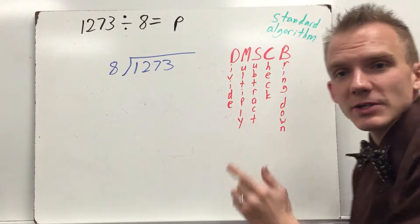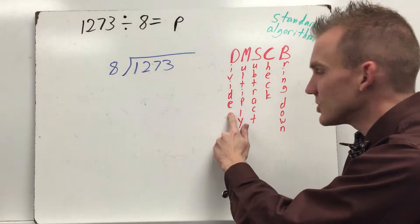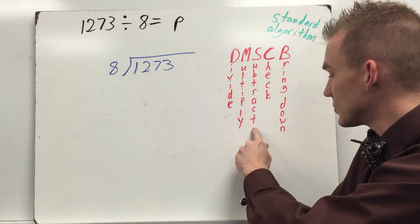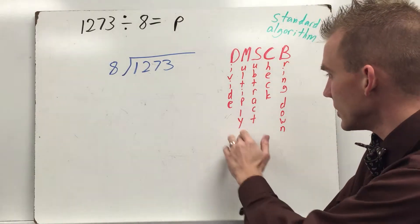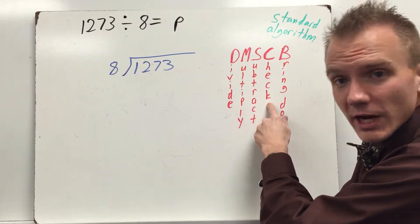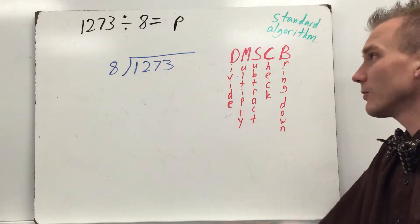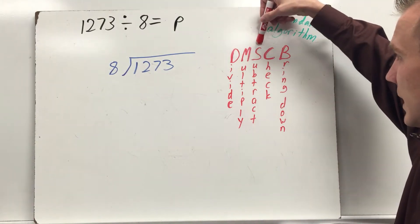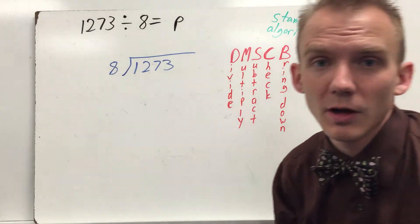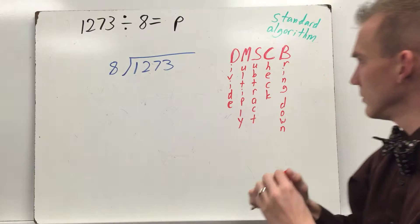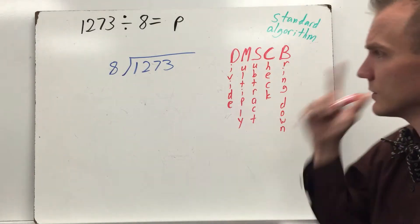We need to remember this. Divide, multiply, subtract. Remember I mentioned all of those previously. Division is our main operation. Multiplication relates directly to division. And subtraction, you repeatedly subtract. So we're going to be doing all three of those. Then we're going to also check our work and bring down numbers. The easiest way to remember our standard algorithm is DMSCB. Well, that's hard to remember. Oh, you know what I do remember? Does McDonald's serve cheeseburgers?